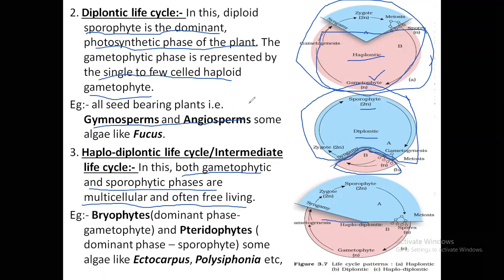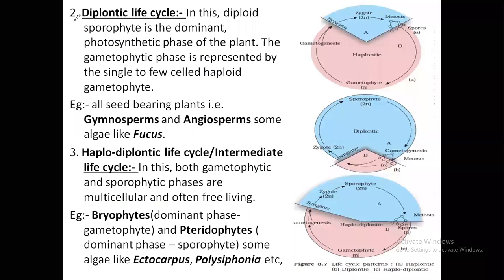In the haplodiplontic life cycle, as you can see in the diagram, it is almost 50-50 percent — roughly half of the life cycle is in the gametophytic phase and half in the sporophytic phase. There is also a term called alternation of generations: from one generation to another, the ploidy number of the plant changes. If it is in a haploid gametophytic stage, it alternates to diploid sporophytic, and then back again — gametophytic, sporophytic — this is called alternation of generations.